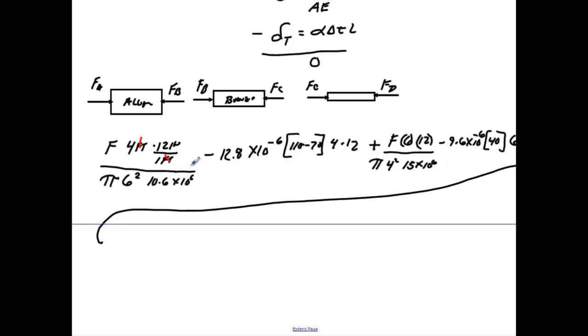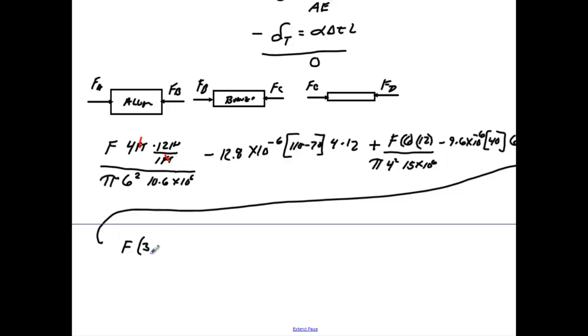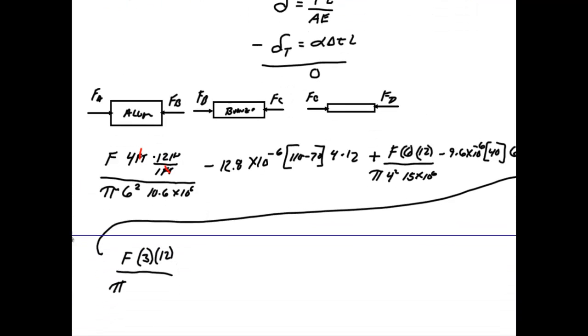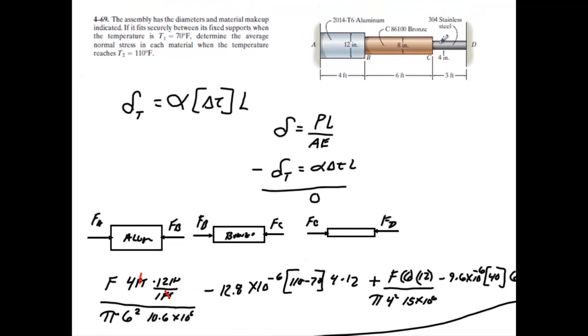We'll put a plus. We're going to come all the way down here and continue this. We go to this guy. It'll be F. Again, you're going to multiply it by the length. The length is 3 times 12. Over the area, which will be pi. Again, check the radius. The radius is 4. So it'll be 2 squared times the modulus of elasticity of stainless steel, which is going to be 28 times 10 to the 6. You're going to minus the thermal expansion. Again, for stainless steel, it's going to be 9.6 times 10 to the minus 6 times the change in temperature, which again, we're just going to do 40, times the length. And the length is what? 3 times 12. And we know that this all has to equal to 0. And again, it can equal 0 because A is fixed and D is fixed. This object cannot push these walls out.